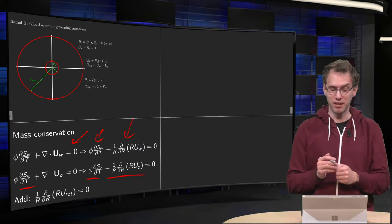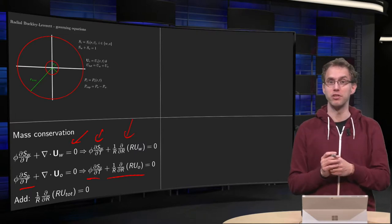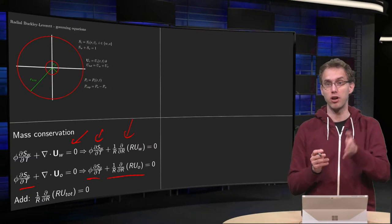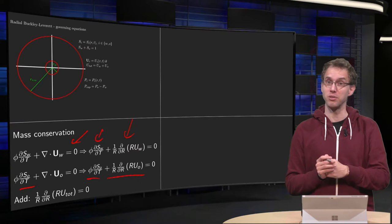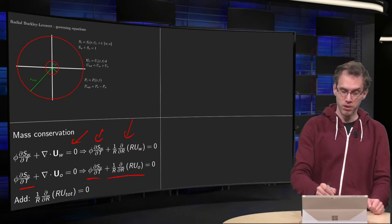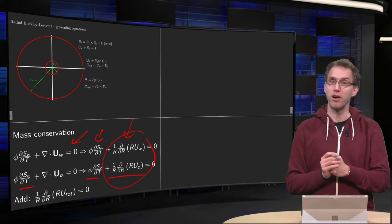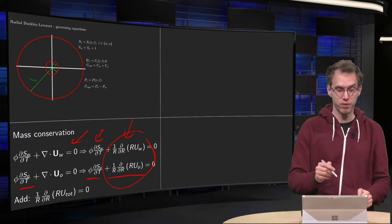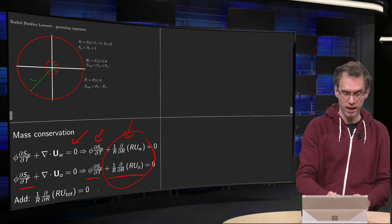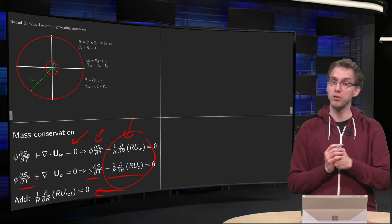It becomes even nicer if we add those two equations, because then the first term yields phi times the d/dt of so plus sw, but so plus sw equals 1 is a constant, so the d/dt equals 0. So the only thing left is the sum of those two terms, the d/dr of r times uw plus uo, which was u-total, so adding those two equations yields a really nice and easy equation for u-total.